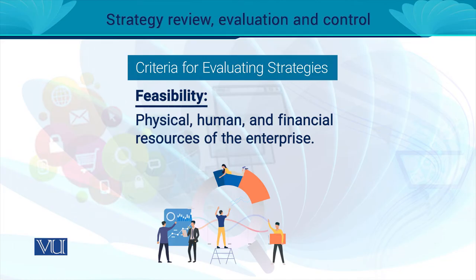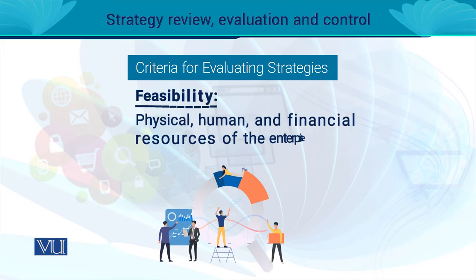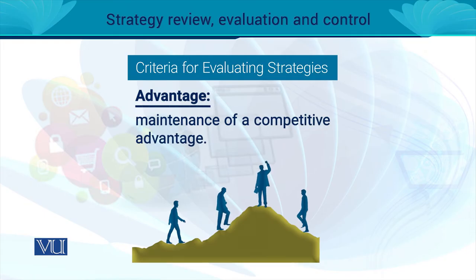Feasibility की बात आती है - सबसे important चीज़ यह है कि आपके पास उस strategy की feasibility plan होनी चाहिए। Feasibility means you should have all relevant resources ताकि आप उस strategy को execute कर सकें। Resources के अंदर physical और non-physical resources, human resources यानि आपकी team, और खास तौर पर financial resources आते हैं। क्या आपके पास right team है, right skill set है, और इतने financial resources हैं कि अगर आप differentiation पर जाना चाहते हैं तो उस certain quality को maintain कर सकें?